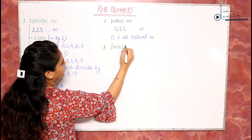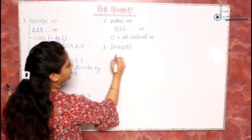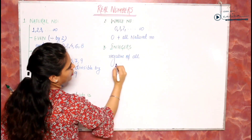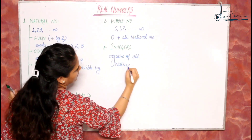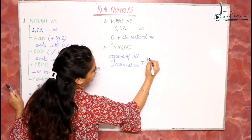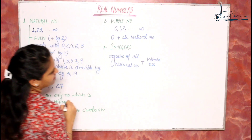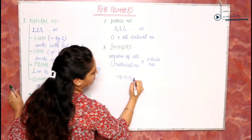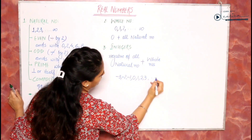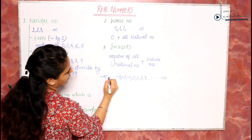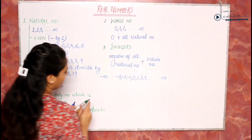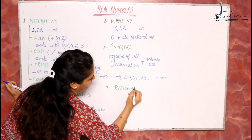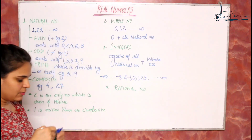The third type of numbers are integers. Integers are the negative of all natural numbers plus whole numbers — that means negative natural numbers: minus 3, minus 2, minus 1, and whole numbers: 0, 1, 2, 3, and so on to infinite.